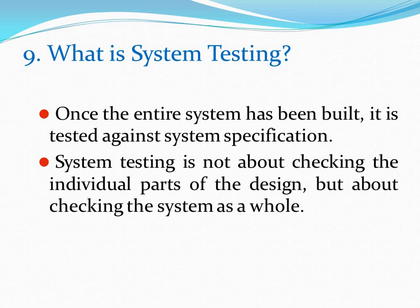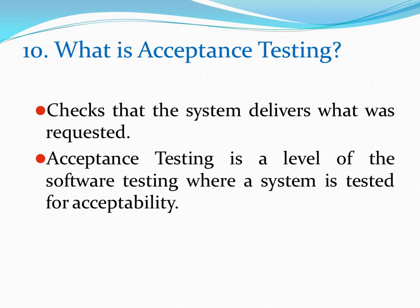What is system testing? Once the entire system has been built, it is tested against system specifications. System testing is not about checking the individual parts of the design but checking the system as a whole. What is acceptance testing? Acceptance testing checks that the system delivers what was requested. It is a level of software testing where a system is tested for acceptability.